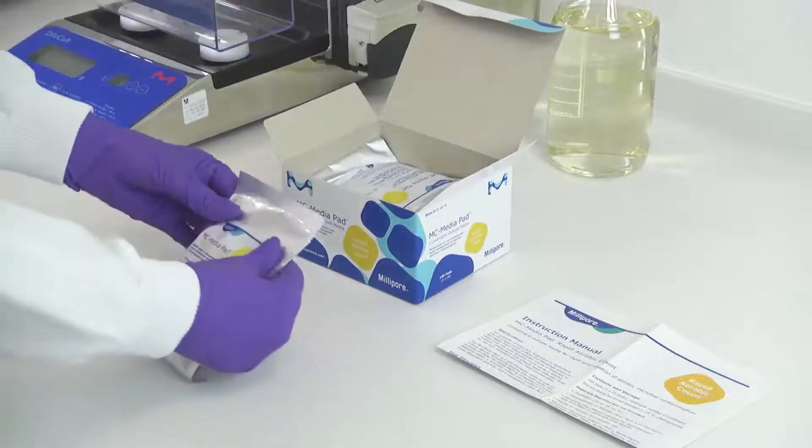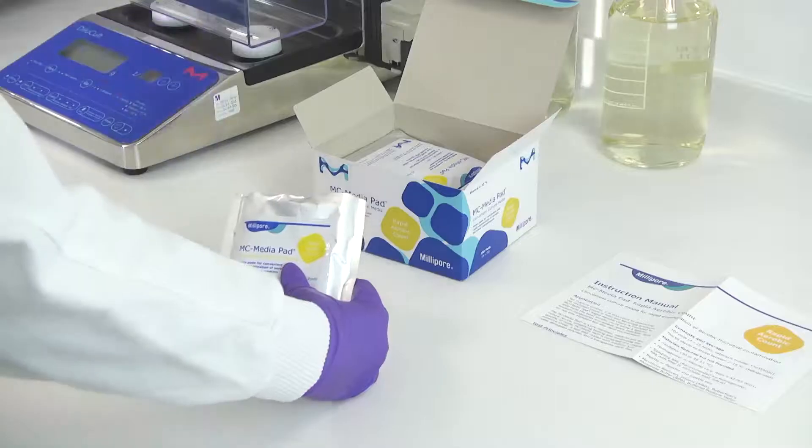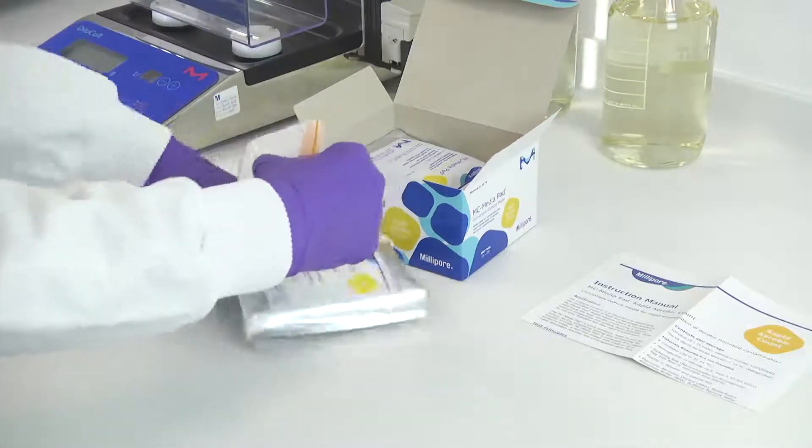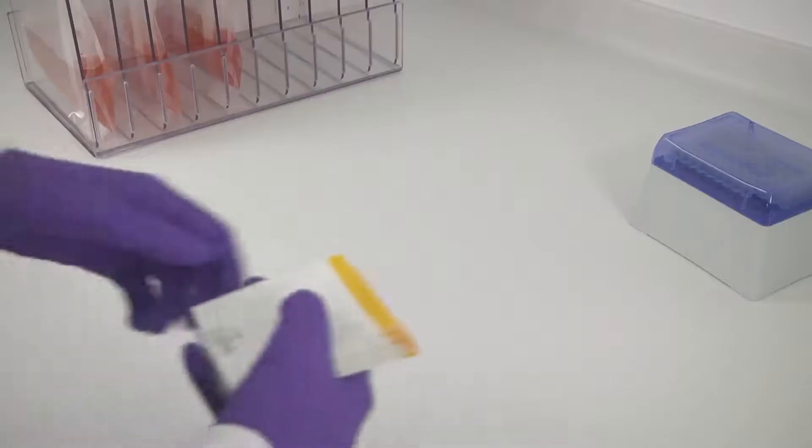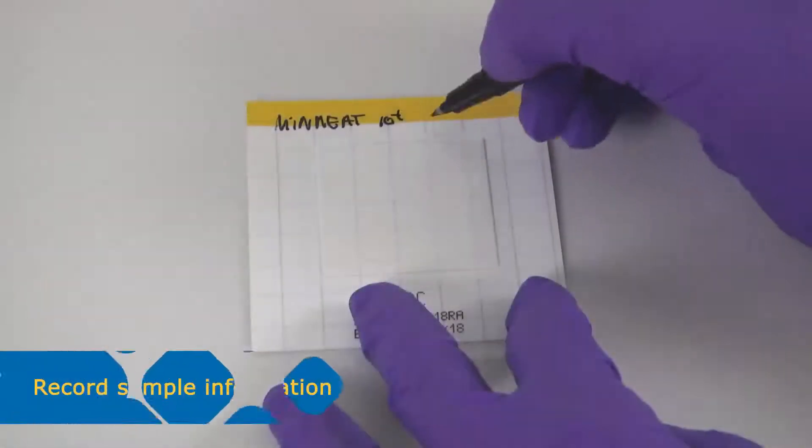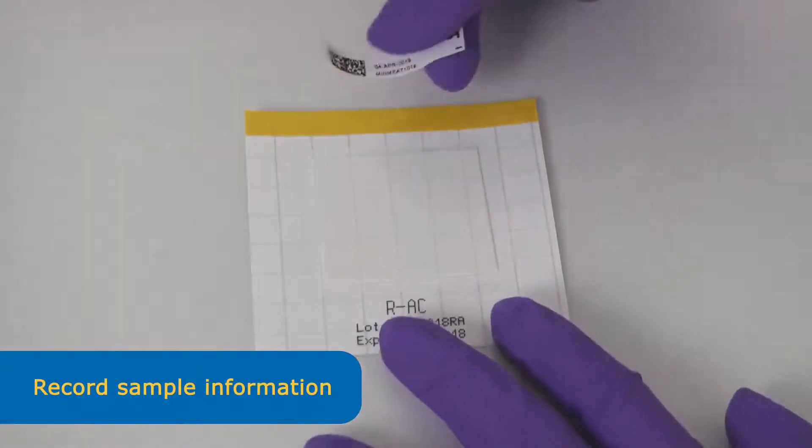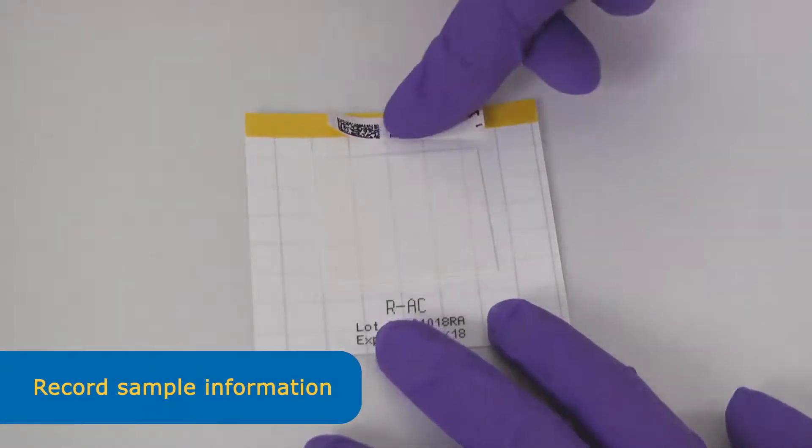The MC MediaPad workflow comprises 4 easy steps. To start the testing take the pad out of the bag and place it on the bench. You have space on each pad to write sample information or attach an adhesive barcode label.